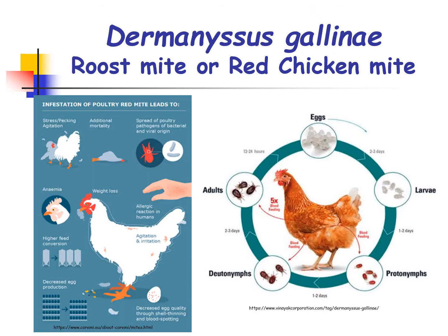This diagram shows the life cycle of the mites, particularly Dermanyssus gallinae. In the life cycle of the mites, we have the larvae and the nymphal stages. For the nymphal stages, we have the protonymph and the deutonymph. The young mites — the larvae, the protonymph, and the deutonymph — look like the adults. The only difference is that they only have three pairs of legs and are smaller compared to the adults.